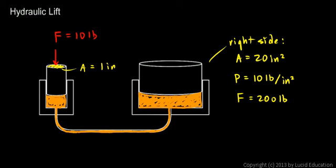Now, the trade-off is that even though there's 20 times as much force, it only moves 1/20th of the distance. You could push this down 20 inches on this side, and it would only go up 1 inch on the right.